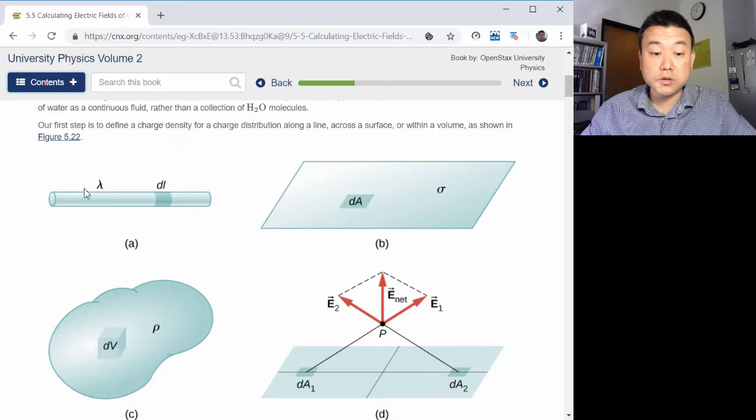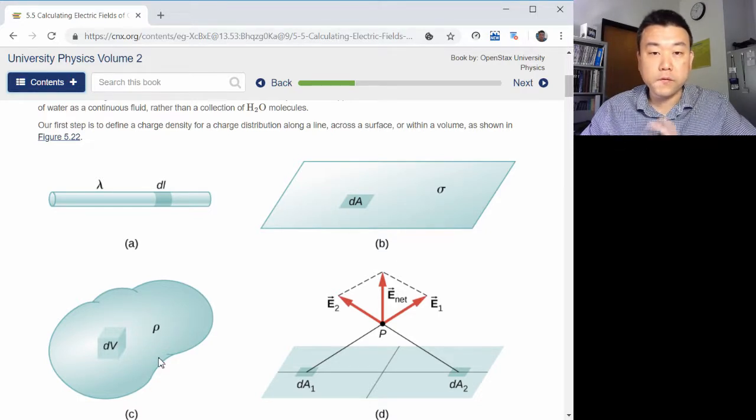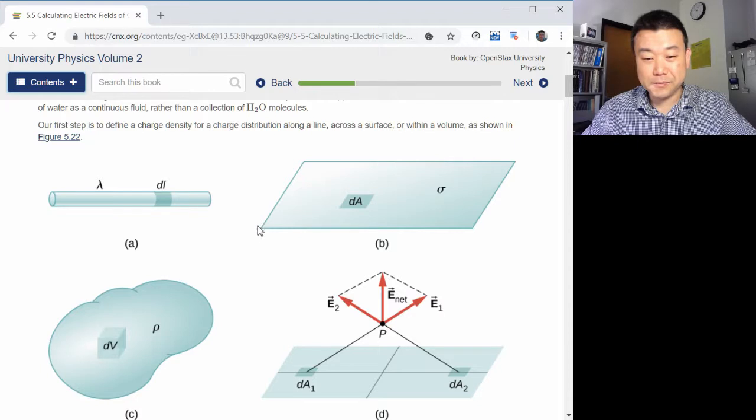Lambda is what we traditionally use for linear charge density. Sigma is what we use for surface charge density. And rho is what we use for volume charge density, or what you more commonly know as density. So as I said, this is the more difficult part.